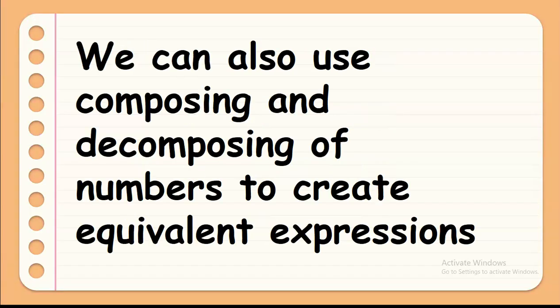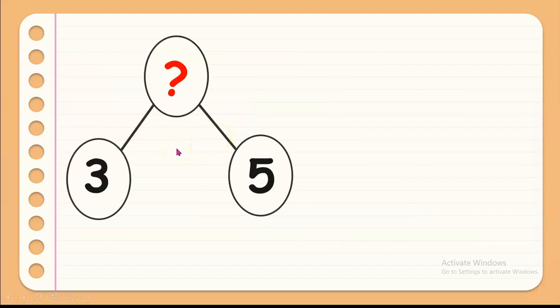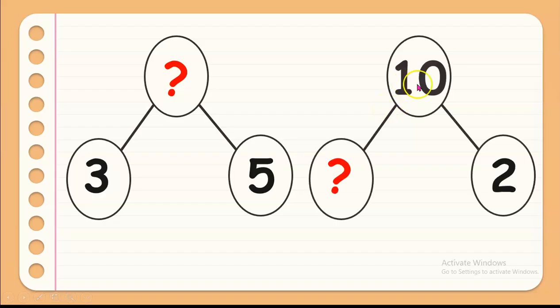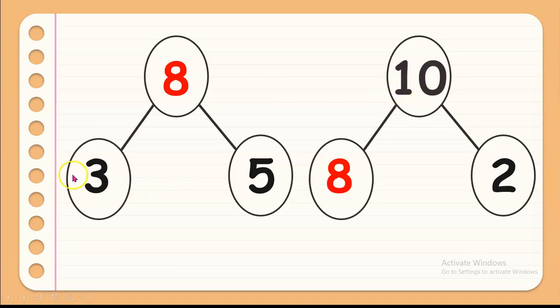Now, we can also use composing and decomposing of numbers to create equivalent expressions. For example, we have 3 and 5 together. Then, what is the missing number? And, when we remove 2 from 10, what is also the missing number? Good job! We have 8. So, when we combine 3 and 5 together, we'll have 8. And, when we remove 2 from 10, then we will also have 8.